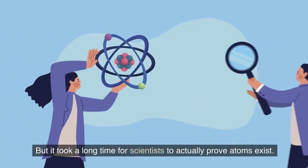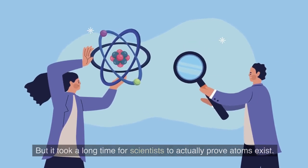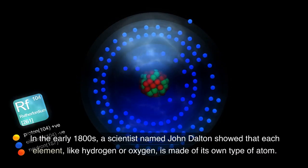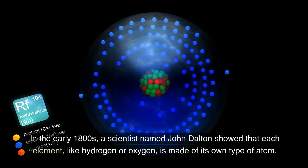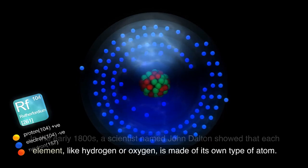But it took a long time for scientists to actually prove atoms exist. In the early 1800s, a scientist named John Dalton showed that each element, like hydrogen or oxygen, is made of its own type of atom.